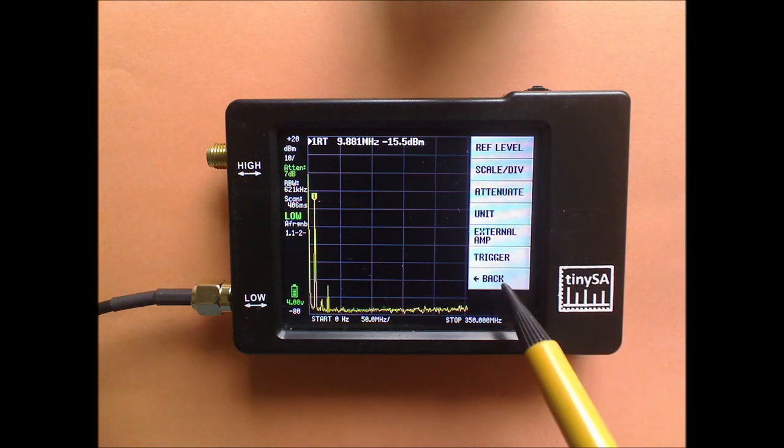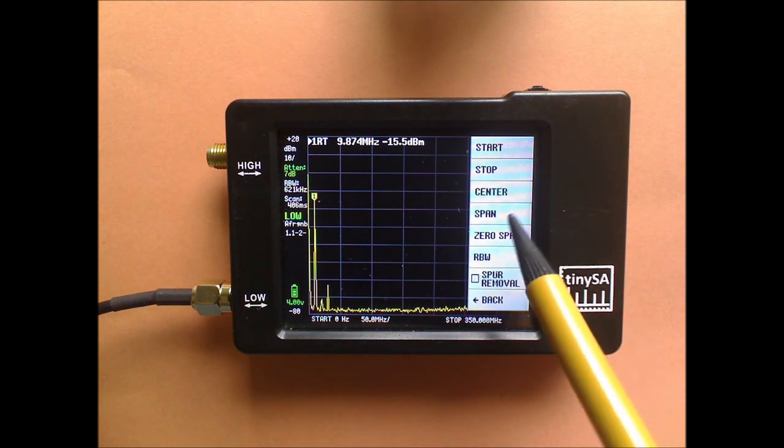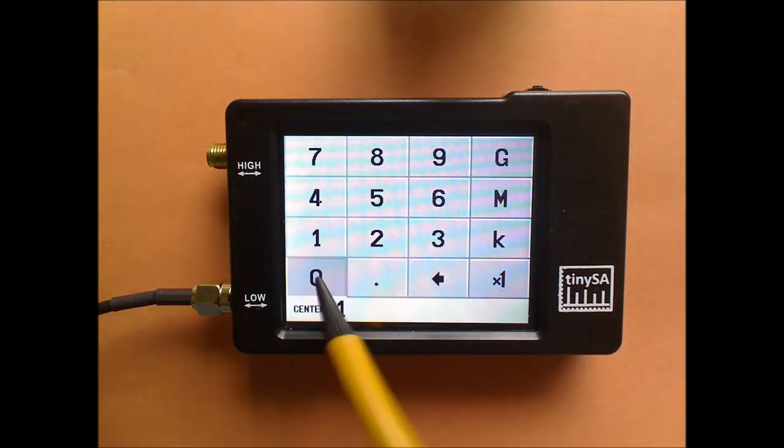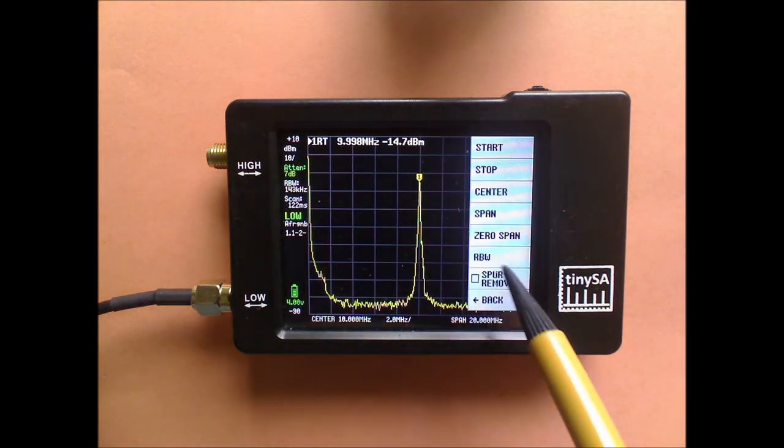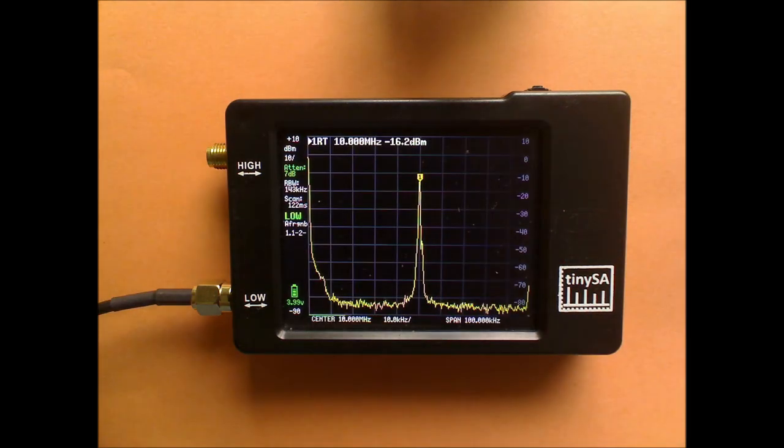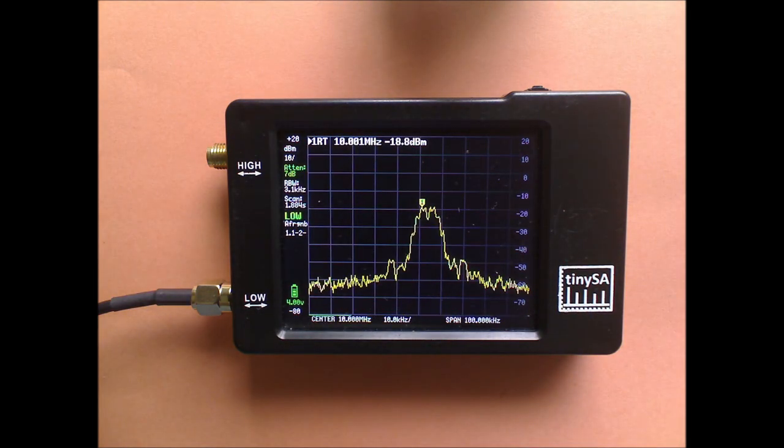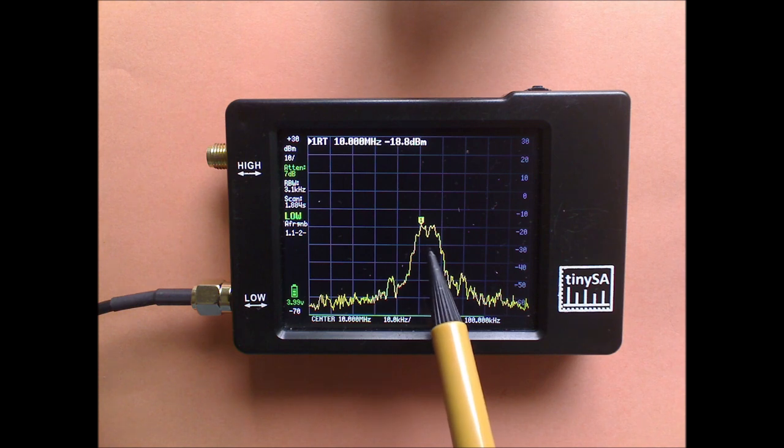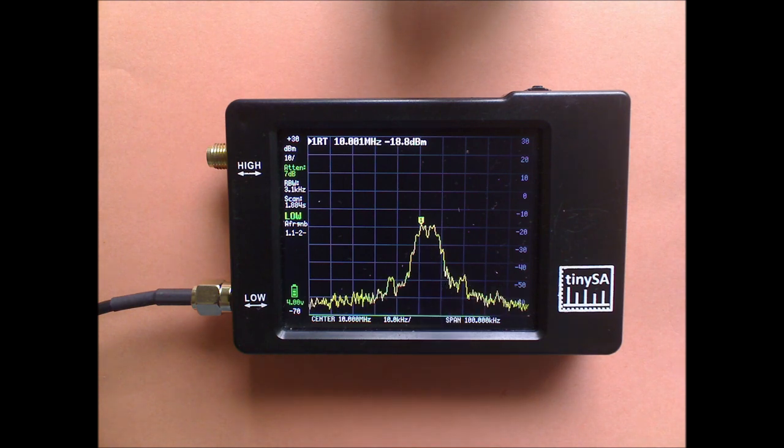And immediately we will go to the center 10 MHz and a span of 0.1 MHz. And we observe something very special. What you see here is the FM modulated signal. And in the middle of that signal, there is a dip.